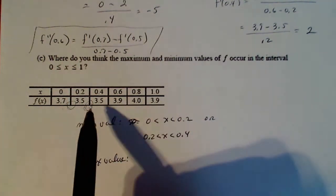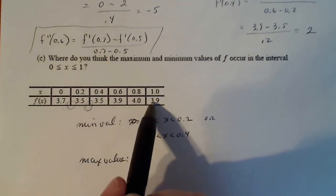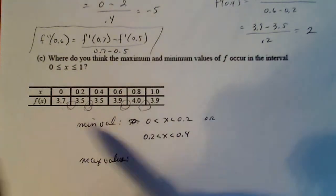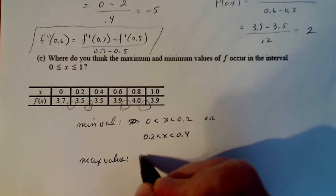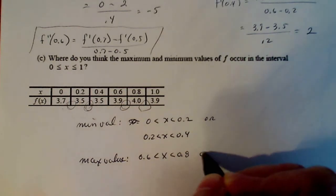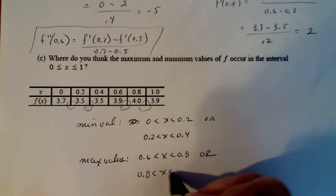And if you talk about the maximum value, it looks like I keep going up from here, up, up, up and then down. So again, the maximum value could occur between any of those two numbers. So between 0.6 and 0.8 or 0.8 to 1.